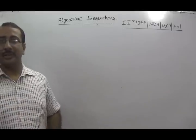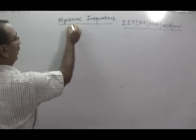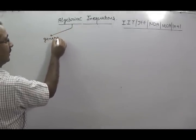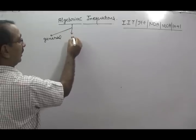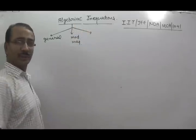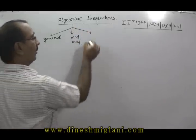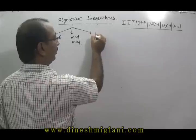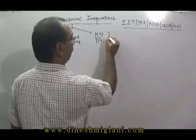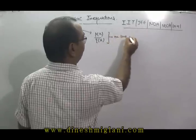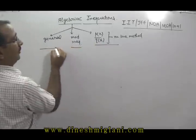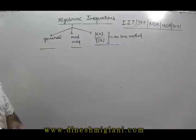We have divided this session into three parts. In the first part, we are going to discuss about the general rules of inequalities. In the second part, we will talk about modulus inequality. And in the third part, we will discuss inequality in P(x)/Q(x) form, which is the number line method. These three parts are there in this session. Now let us start.